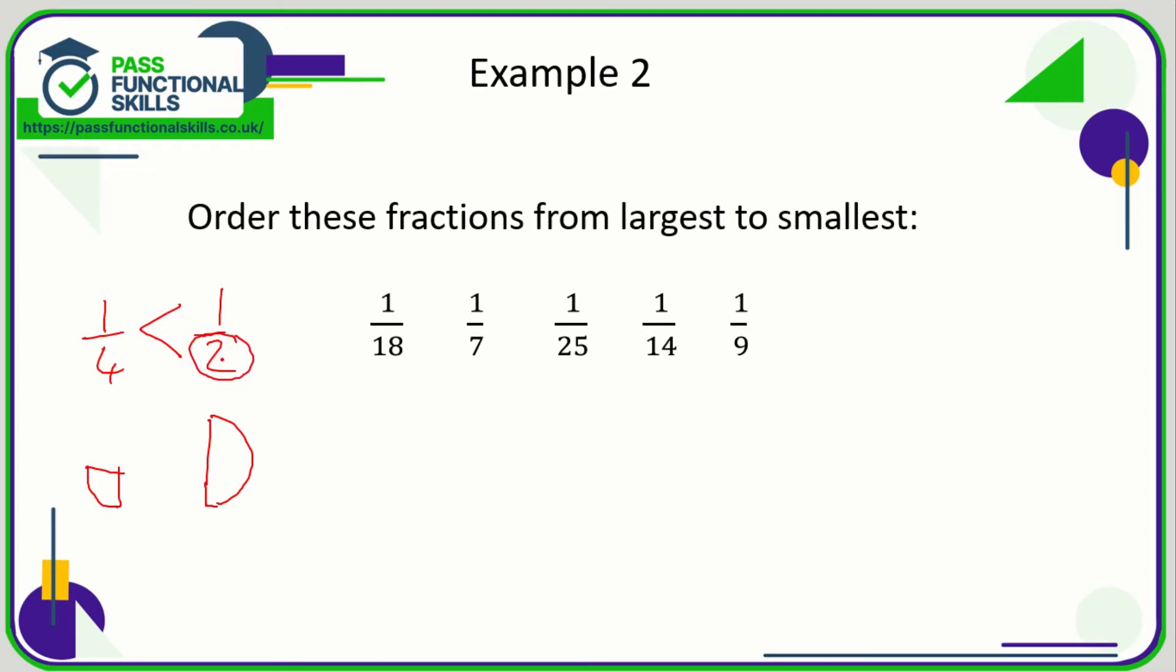So a half is bigger than one-quarter. So the smaller the lower the number on the bottom, the bigger the fraction. So the biggest fraction is going to be the one with the lowest number on the bottom. So the biggest fraction is going to be one-seventh, the next biggest is going to be one-ninth, then one-fourteenth, then one-eighteenth, and then one-twenty-fifth. And we're done.